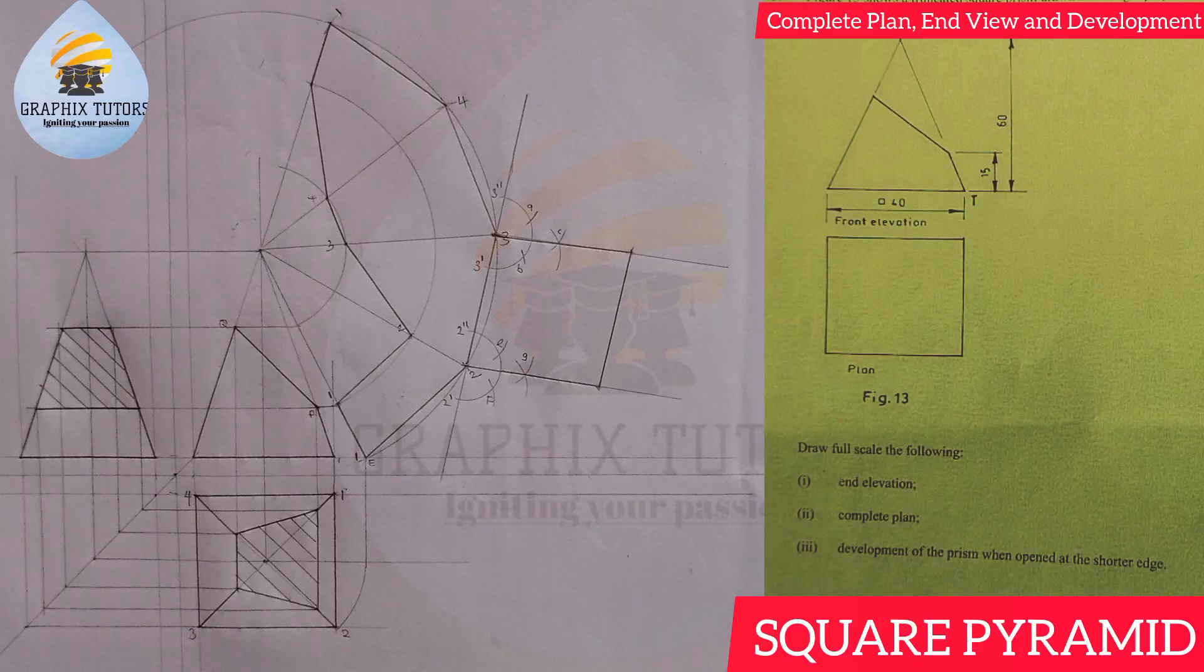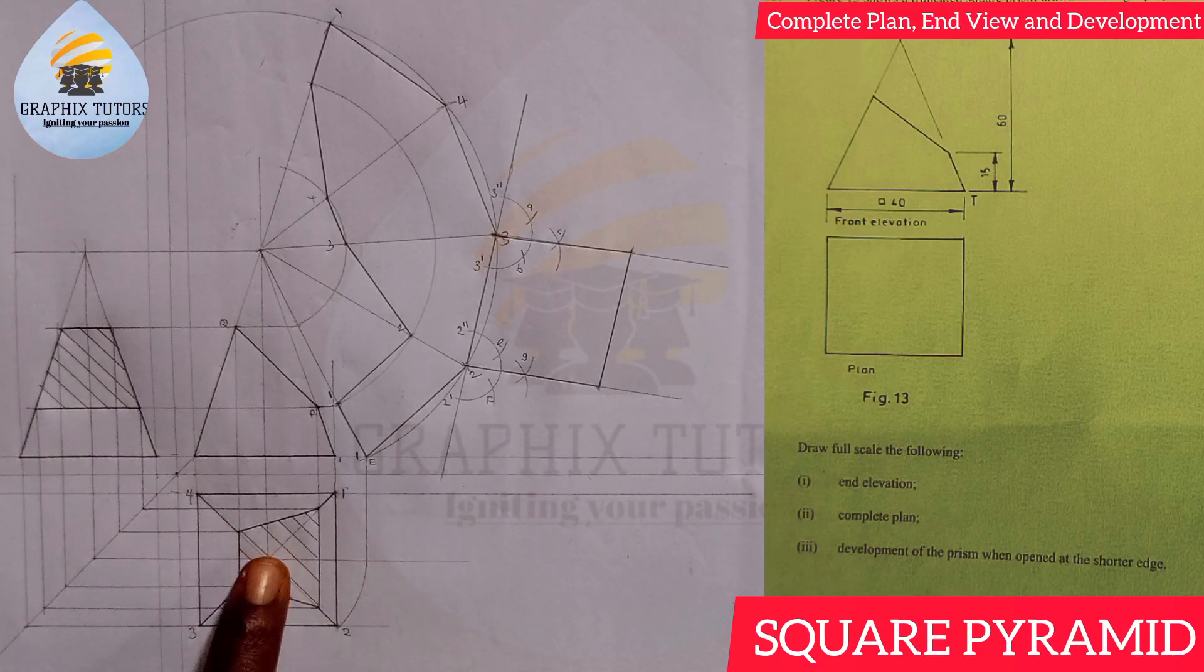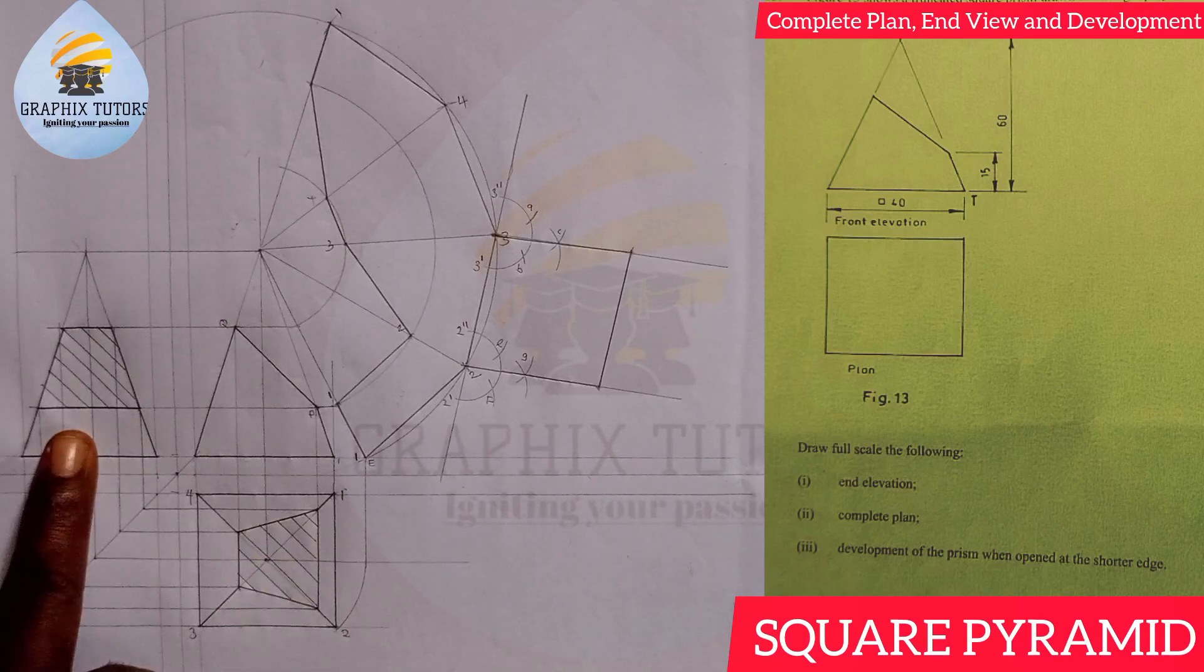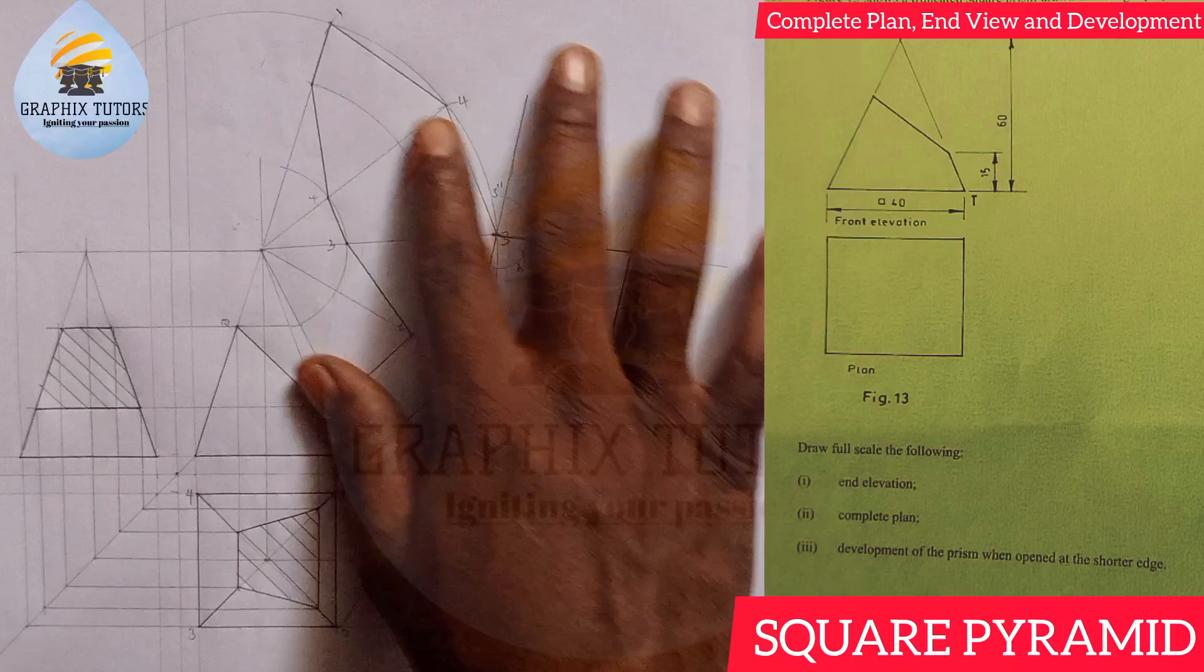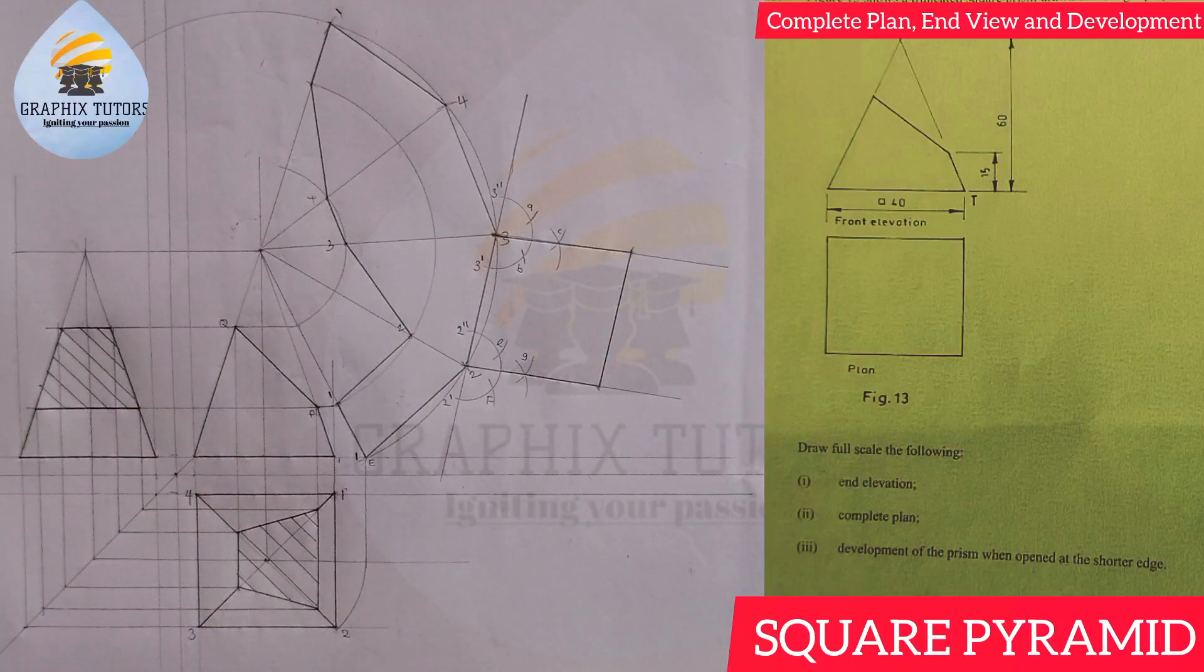Good everyone, my name is Graphics. We have successfully reproduced a figure that is displayed at the right-hand side of the screen. We are to draw the complete plan, the end elevation, and also the development of this shape. Now if you look closely, you realize that it is a pyramid that has a square base, a square pyramid.